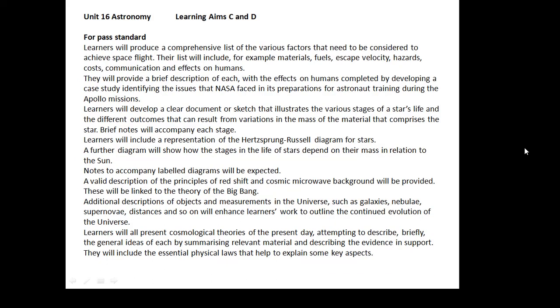Now, let's look at an example. This is unit 16 astronomy, and it's for learning aims C and D. There's A, there's B, and the C and D together. And this is just for pass standard. This is learning aim C and D for pass standard. Never mind merit and distinction. This is just for a pass. And when you look at this, you think, blimey, that's a mountain. There's so much stuff in there. And there is actually, there's an awful lot of stuff in there that you need to do.